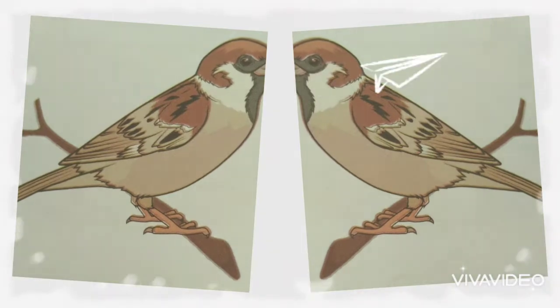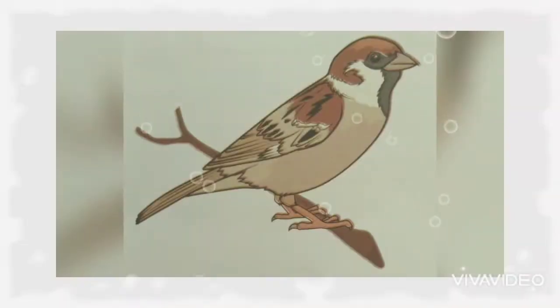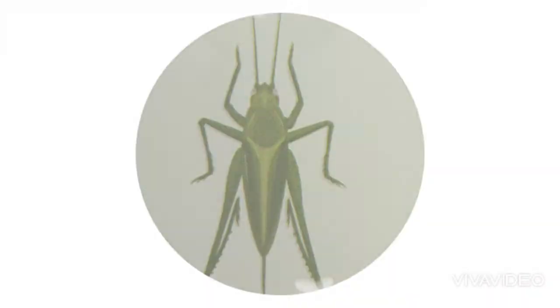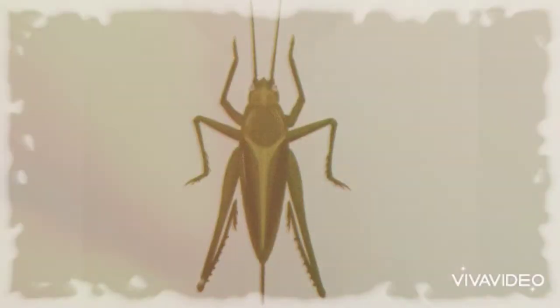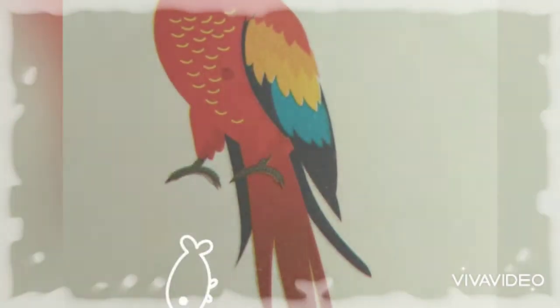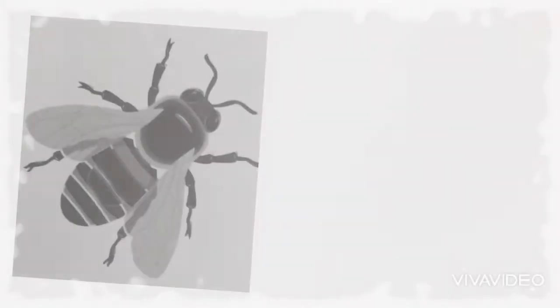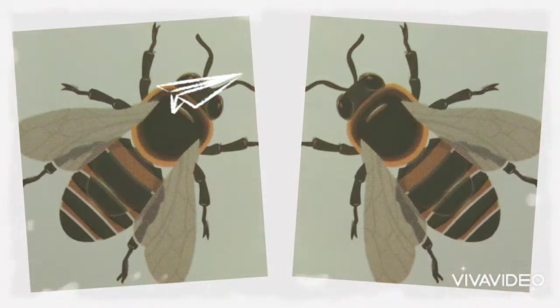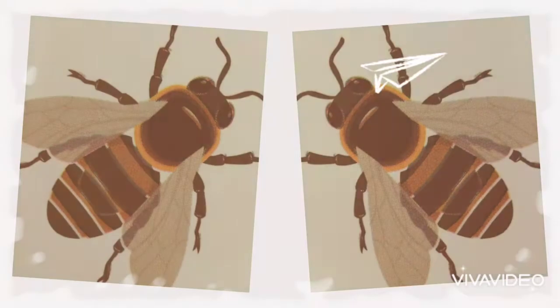What is this? This is a grasshopper. What is this? This is a macaw. What is this? This is a honeybee. These are living things, small in size.